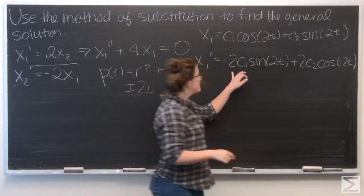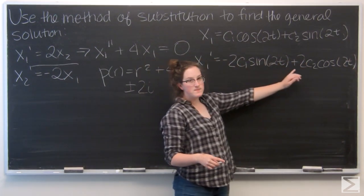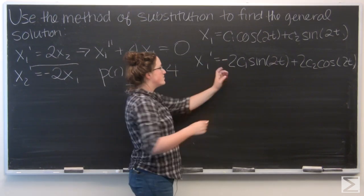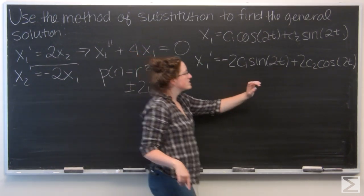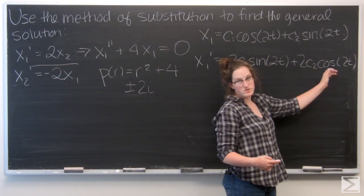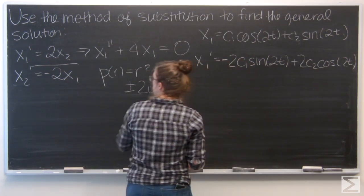Which is going to be negative 2c1 sine of 2t plus 2c2 cosine of 2t.